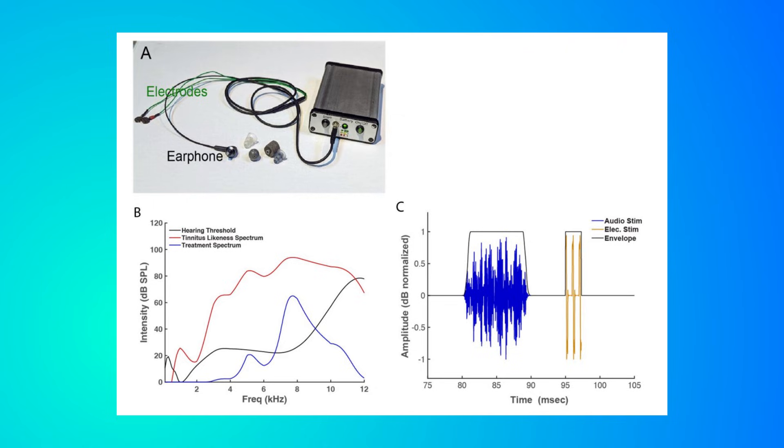For those of you who don't know, bisensory neuromodulation pairs sound with precisely timed somatosensory stimulation, which is often mild stimulation delivered to areas innervated by the trigeminal or cervical nerves. The goal is to use timing-dependent plasticity or spike timing-dependent plasticity to shift the abnormal activity patterns that contribute to tinnitus, especially somatic tinnitus, where jaw or neck movements can modulate the tinnitus.